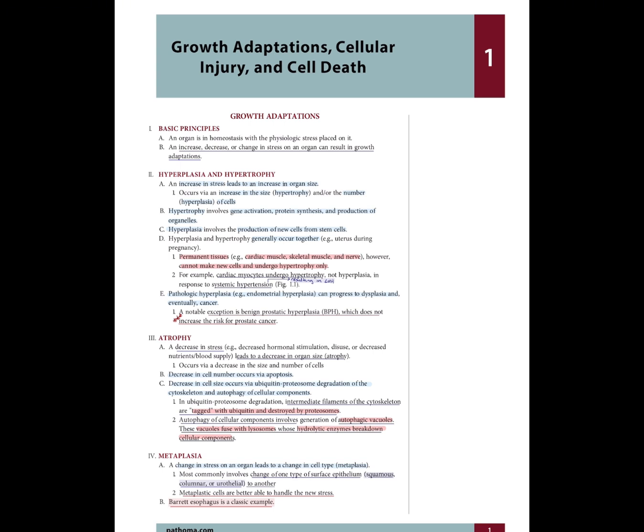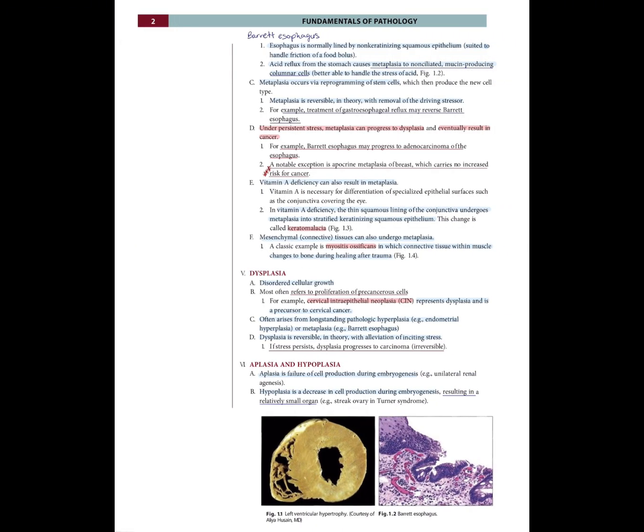Permanent tissues — for example, cardiac muscle, skeletal muscle, and nerve — cannot make new cells and undergo hypertrophy only. For example, cardiac myocytes undergo hypertrophy, not hyperplasia, in response to systemic hypertension, which results in left ventricular hypertrophy. We have a figure here, figure 1.1, which illustrates left ventricular hypertrophy.